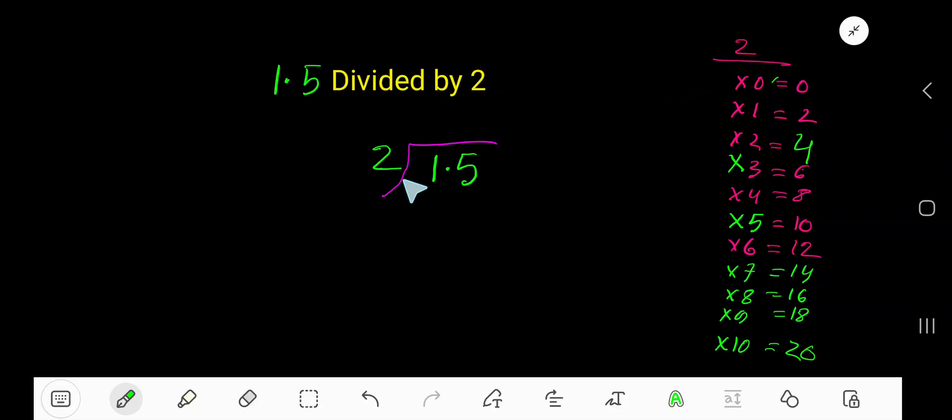1.5 divided by 2. Here the 2 is a divisor, so we need the multiplication table of 2: 2 times 0 is 0, 2 times 1 is 2, 2 times 2 is 4, 2 times 3 is 6, 2 times 4 is 8, 2 times 5 is 10. To find the multiplication table of 2 easily, just add to the previous step: 0 plus 2 is 2,